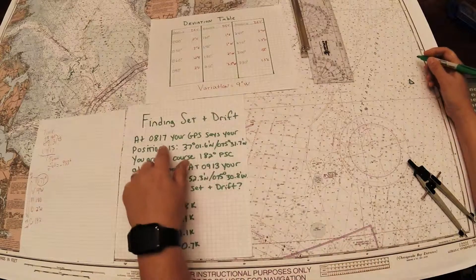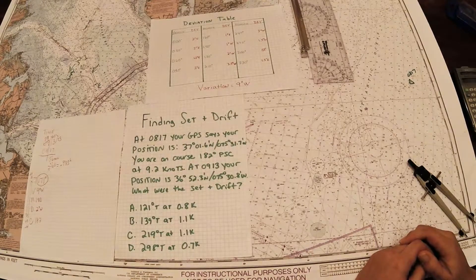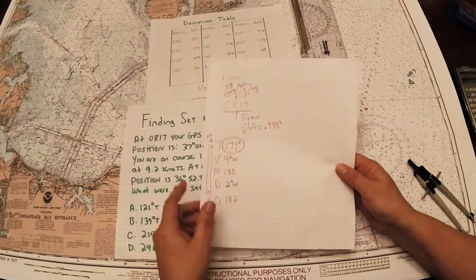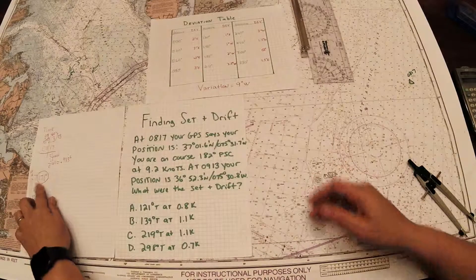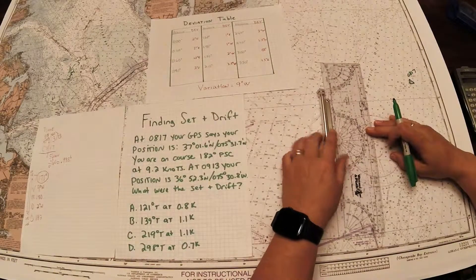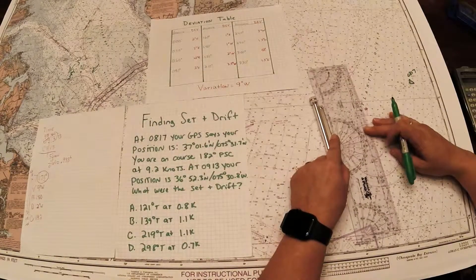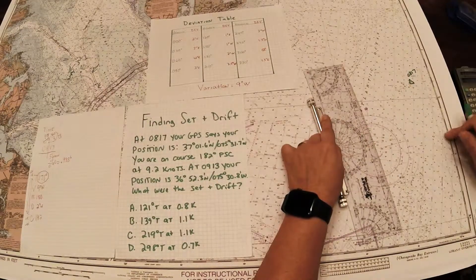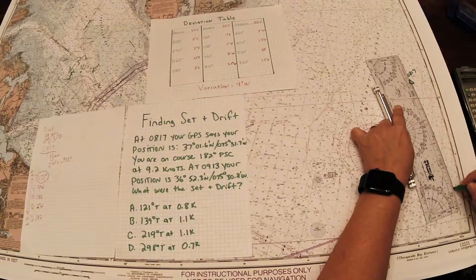From there it said I was on a course of 182 PSC, but I know I've converted and that's 171 true, so I'm going to lay down my true course of 171. I'm going to come over to my compass rose. Remember to use the outer ring lined up with the cross hair in the center. So I've got 171, I'm going to roll that over to my fix and draw out my course nice and long.